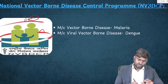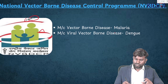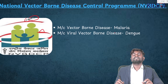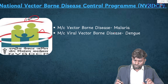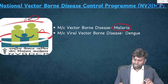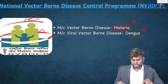This image, where you also see a mosquito, is going to be called the National Vector Borne Disease Control Program. The most common vector-borne disease is going to be malaria. The most common viral vector-borne disease is going to be dengue.